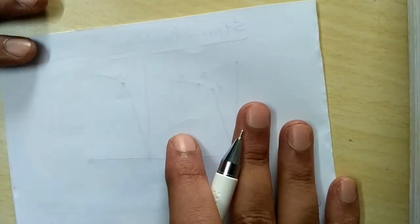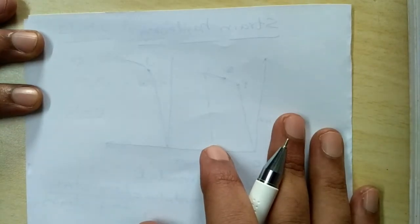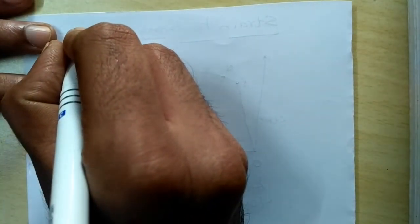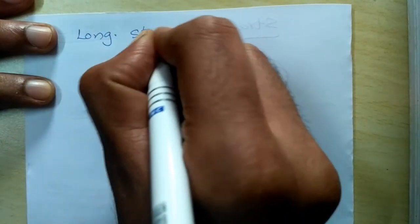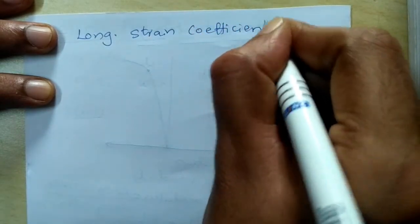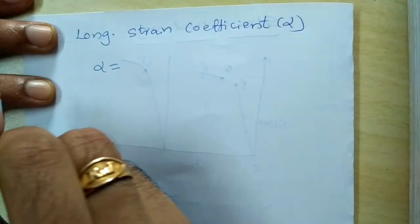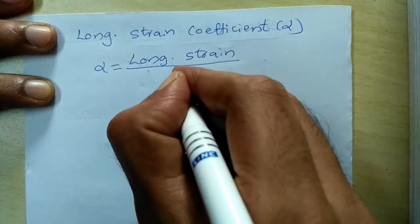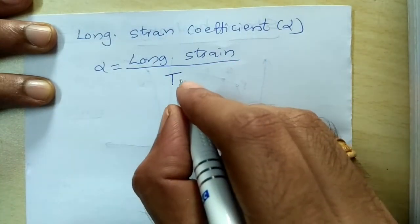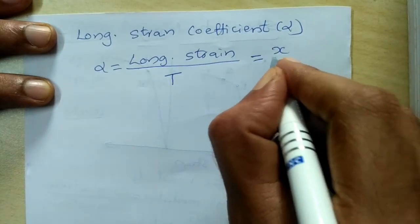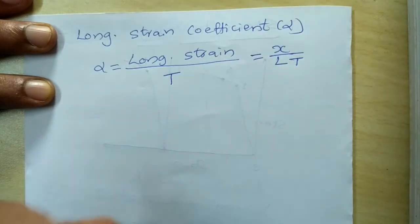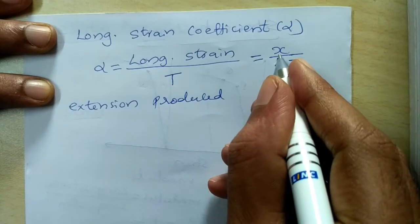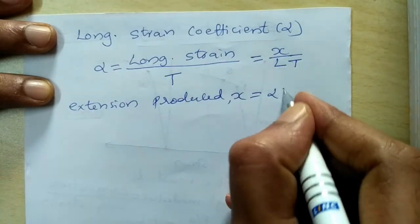Now we'll relate the various elastic moduli by discussing key coefficients. The longitudinal strain coefficient, denoted by α, is the ratio of longitudinal strain produced per unit stress: α = (x/L) / t. Therefore, the extension produced is x = α · L · t.